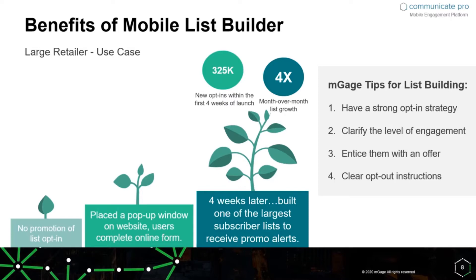They had to step back and say, okay, what is it that we want to achieve? The company wanted to really target a specific user set. As you can see on the growing tree graphic here, they placed a pop-up window on the website where users can complete an online form. They were targeting very specifically the web users — rather than spreading the net wide, they focused on a core demographic and built a process that really works for that specific user type.